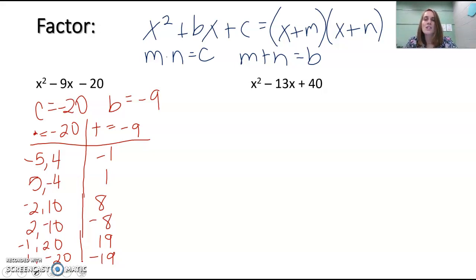What we actually have here is a polynomial that is not factorable, and we call that prime. Like a prime number that cannot be divisible by anything besides 1 and itself, this polynomial cannot be factored, so we call it prime.